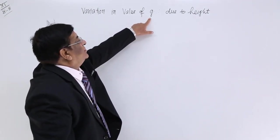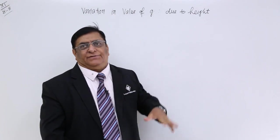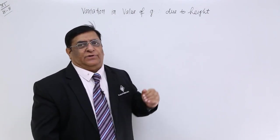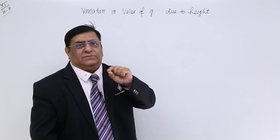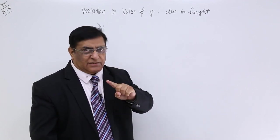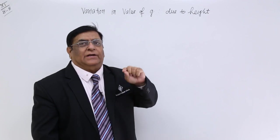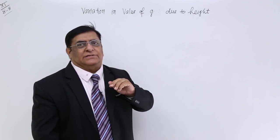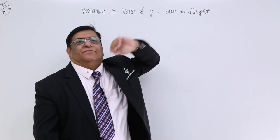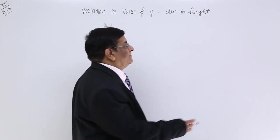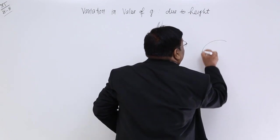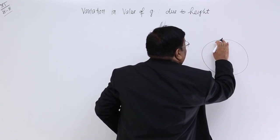The value of acceleration due to gravity may change. There are three or four reasons. The first reason we will see is if we are taking the value of g at a location that is higher than the surface of the earth, then the value of g will change. How much will it change? We can calculate.